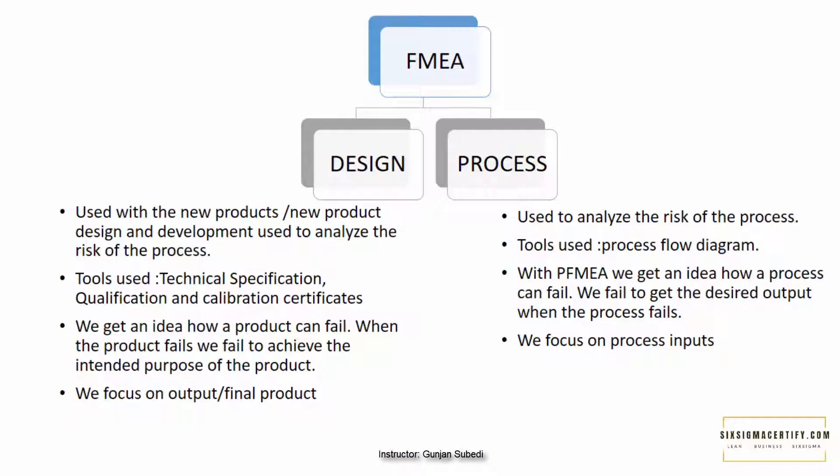D-FMEA is basically used with new products or new product design and development, whereas P-FMEA is used to analyze the risk of the process. So essentially, D-FMEA is looking at the product and P-FMEA is looking at the process.